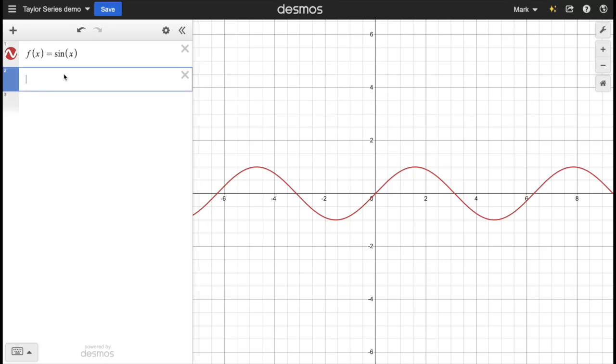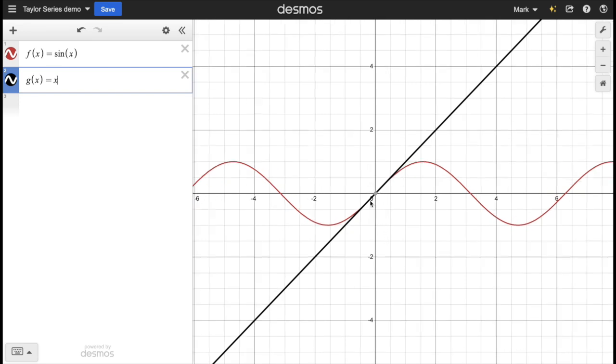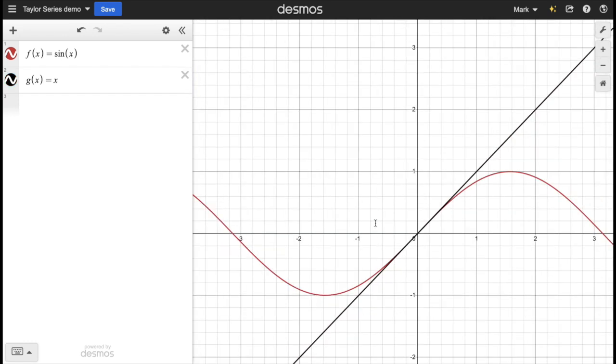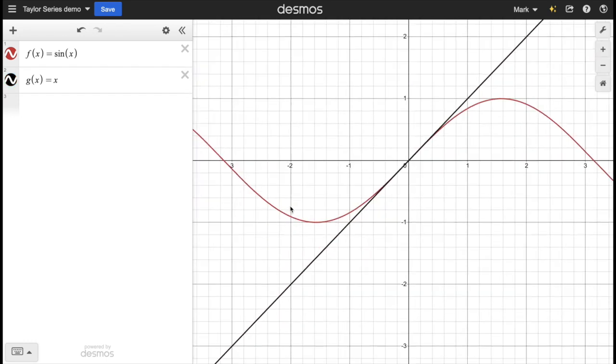So here we have the sine function for reference, and let's start writing out our polynomial approximation. So here we have g(x) equals x—that's the first term. Note that of course this is just a line, but if we're very close to our a, zero, if we're very close to our a, then our approximation is decent. But as we get farther it diverges, and to be precise in this region we have to retain more terms.